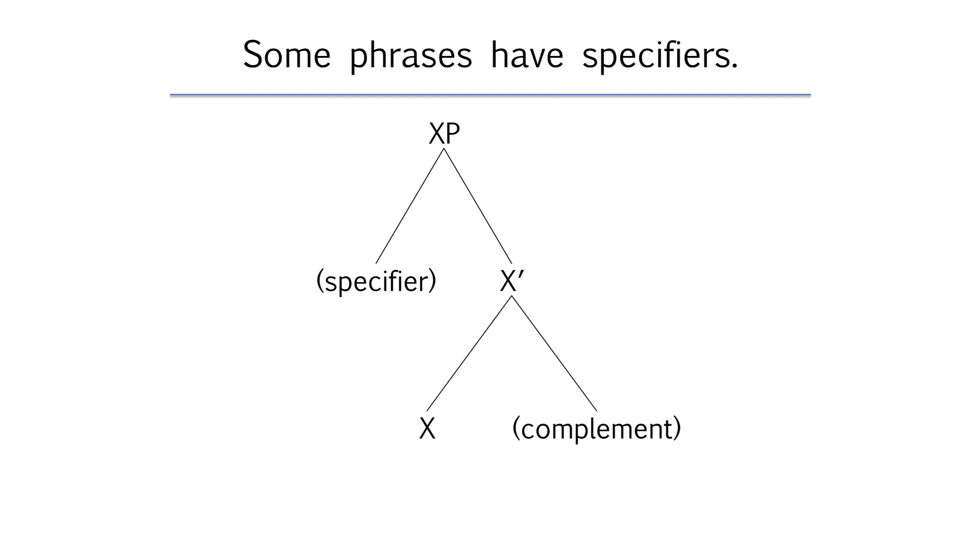X-bar theory also proposes that phrases can have a specifier. A specifier is a word that's sister to the bar level and daughter to the phrase level. The most common job for specifiers is as the subjects of sentences so we'll look at those in another unit.